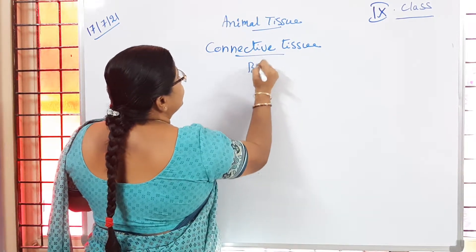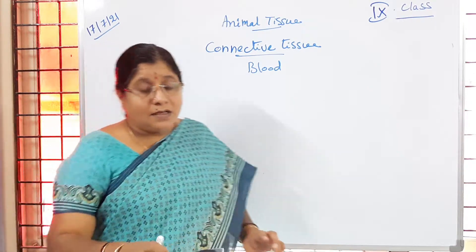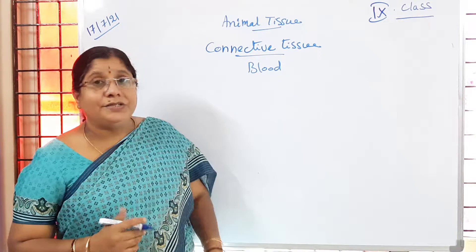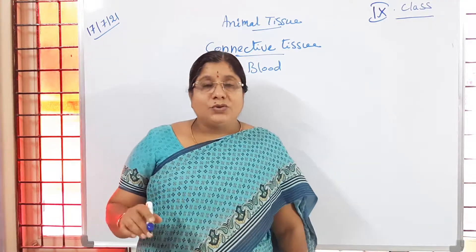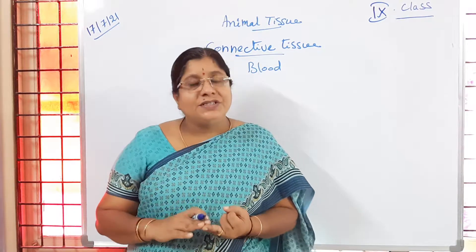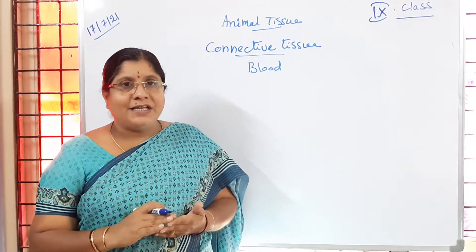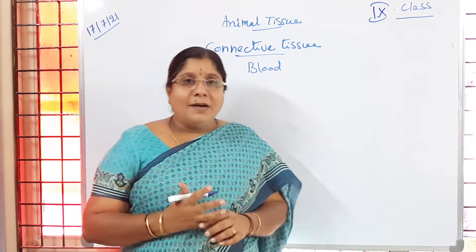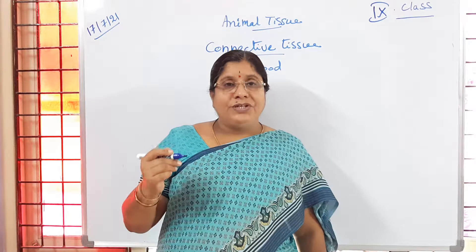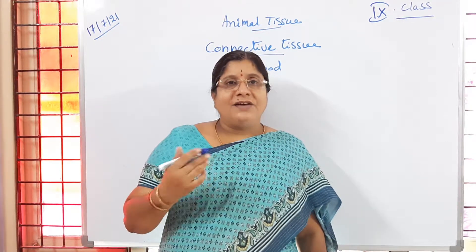Can you recall the different types of connective tissues we covered so far? They are areolar tissue, adipose tissue, bone, cartilage, tendon, and ligament. We learnt about the structure and functions of all these types of connective tissues.